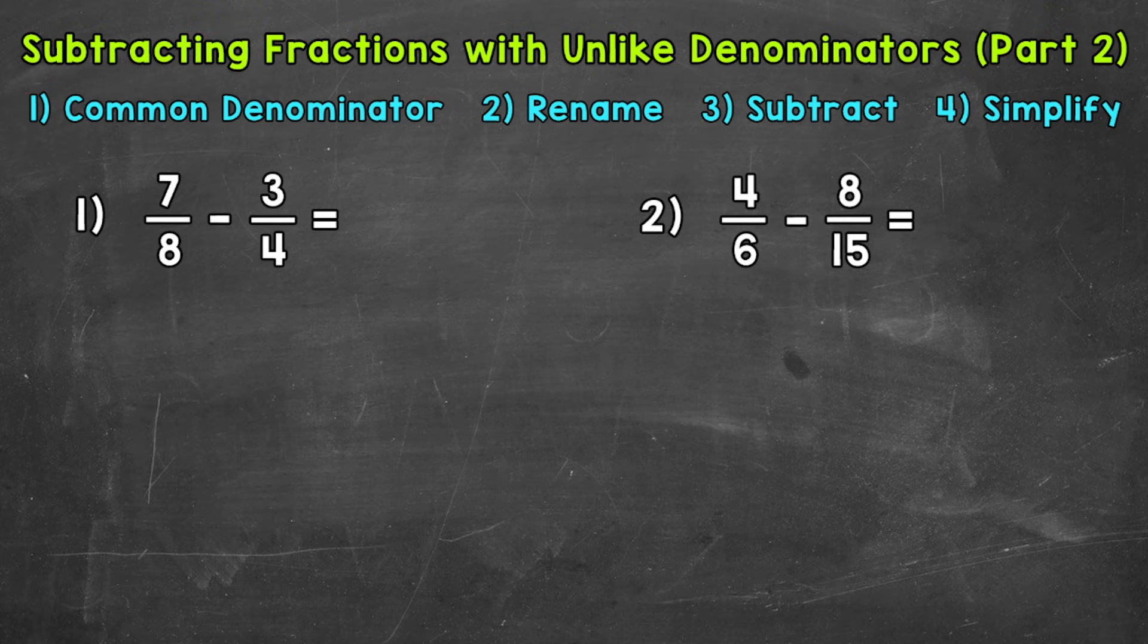The first thing that we need to do is find a common denominator. Now you may recognize what that common denominator is right when you look at the problem. If not, we need to write out some multiples of both eight and four and look for that least common multiple. That's going to be our common denominator. I'm going to come to the bottom of the screen where I have some extra room to write out the multiples and we'll look for that least common multiple that will be our common denominator.